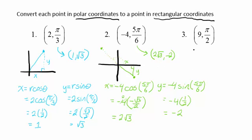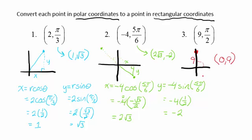For the last example here, let's look at 9, pi over 2. Now 9 pi over 2 — the angle of rotation would be pi over 2, which lives on the positive y-axis, 9 units up from the origin. So the rectangular coordinates would be 0, 9. I hope this video was helpful, and I will see you guys next time.